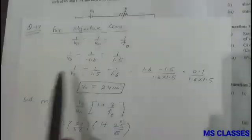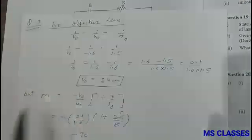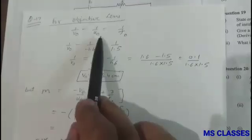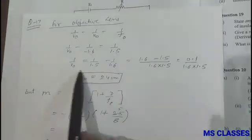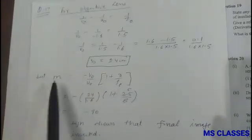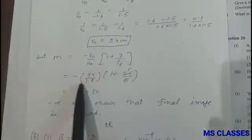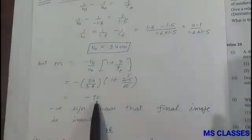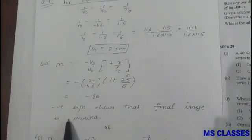So for objective lens we know 1 by V0 minus 1 by U0 is 1 by F0. So if you just use the sign convention and put the values we get V0 as 24 centimeter. We know M, that is M0 into ME, and if you put the value we get 90, where negative sign shows that the final image is inverted.